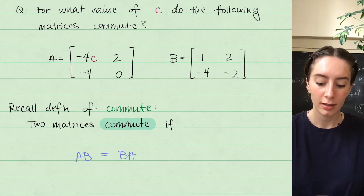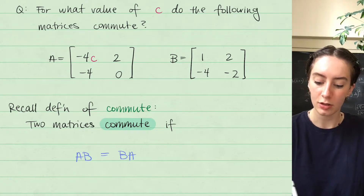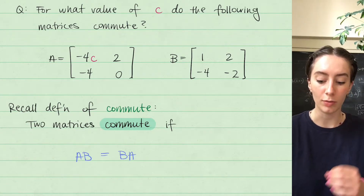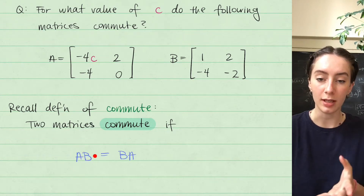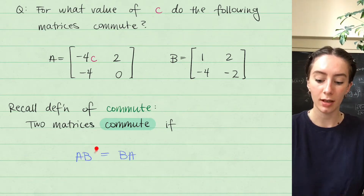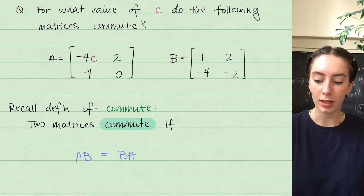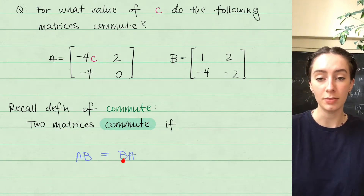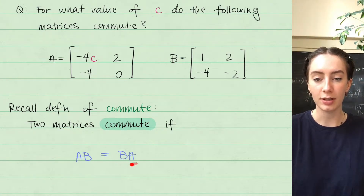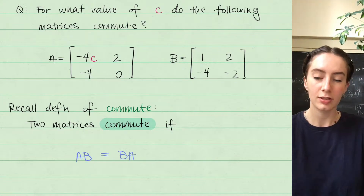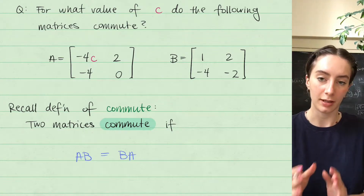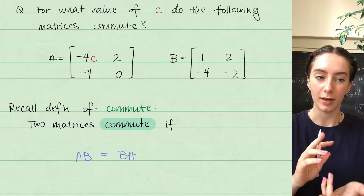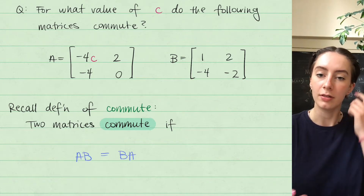What does commute mean? The definition of commute is: two matrices commute if when you multiply A times B in that order, you get the same matrix as when you multiply in the reverse order, B times A. If you multiply them one way and in the other order, you get the same answer.